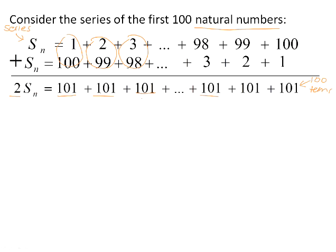Now, there we added the first 100 natural numbers, so there were 100 terms of the sequence. In other words, we have got 100 101s. So if we want to write that out more simply, we can say that 2Sn is actually equal to 100 101s, 100 multiplied by 101.